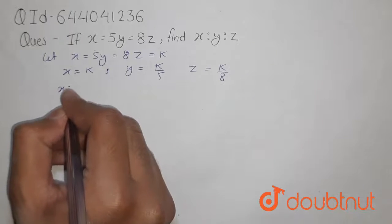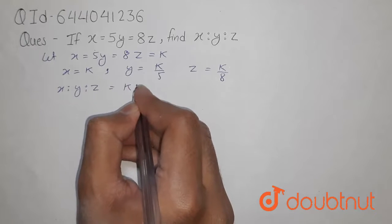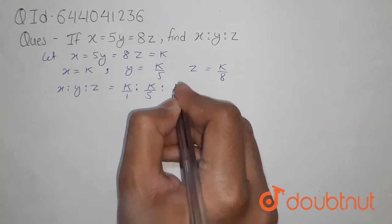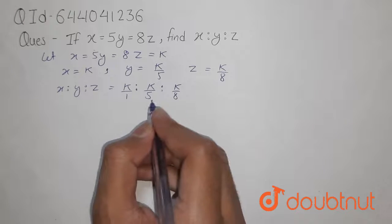Now, x ratio y ratio z will be k ratio k upon 1 ratio k upon 5 ratio k upon 8. Now, we will take the LCM of 1, 5, 8.